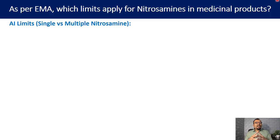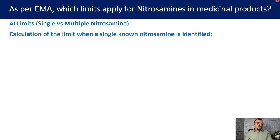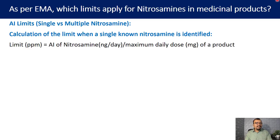When a single known nitrosamine is identified in a product, you can calculate the limit in ppm using the following formula: acceptable intake of nitrosamine in nanograms per day divided by maximum daily dose in milligrams.